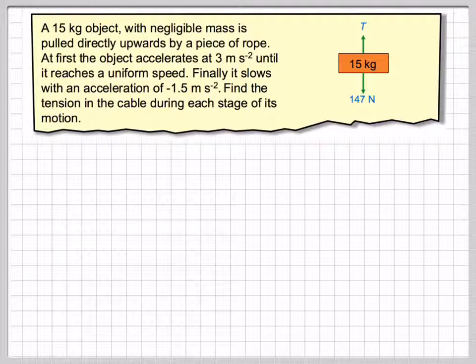There are three stages of its motion here. First, when it first accelerates, second at its uniform speed, and thirdly, when it has an acceleration of minus 1.5 metres per second squared. Here we realize it's slowing down.